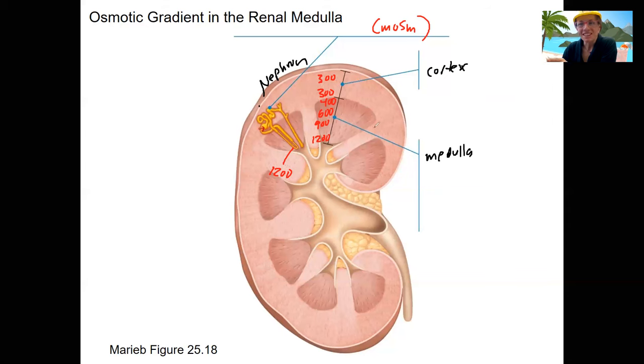And so it's going to be these juxtamedullary nephrons with the vasa recta surrounding them that are really going to allow the nephron loop to do its thing. Versus those cortical nephrons, right, those are up here. So not going to be the same function.